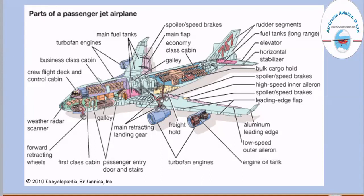Next we have the main retracting landing gears. These aircraft have retracting landing gears which are retracted back into the fuselage body after takeoff, and while landing the landing gear comes out and gets into position. Next to that we have the passenger entry door and stairs — there are two entrances into the aircraft. Just behind the cockpit we have the first class cabin, followed by the business class cabin. At last we have the forward tracking wheels situated just below the nose.